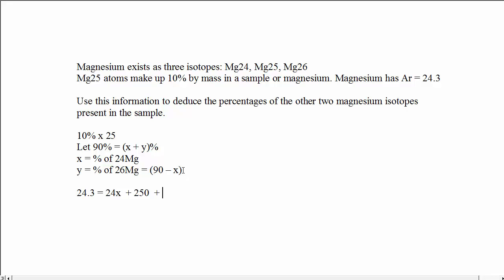the other 26 isotope is 26 brackets 90 minus x. And all of that has to be divided at the end of it by 100.